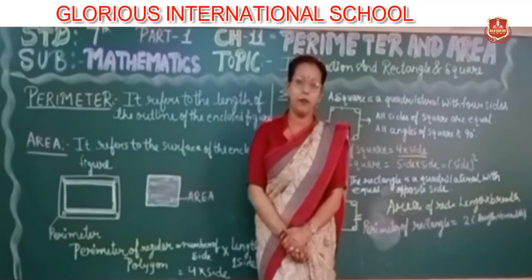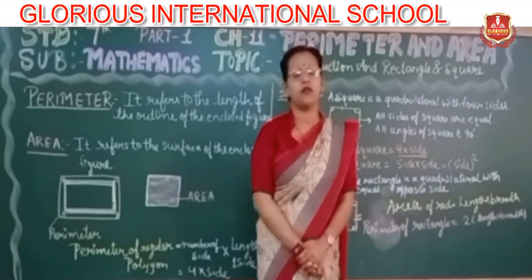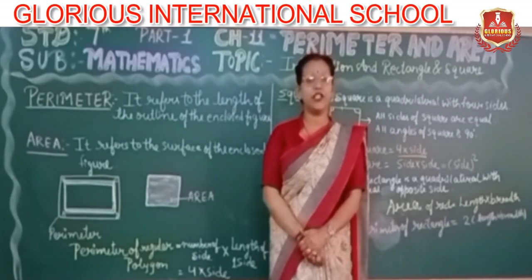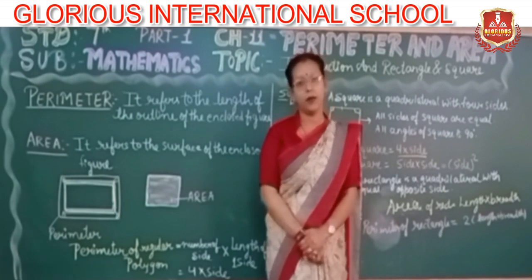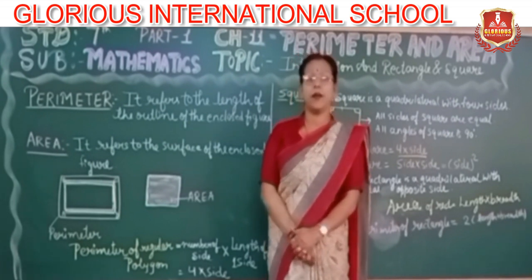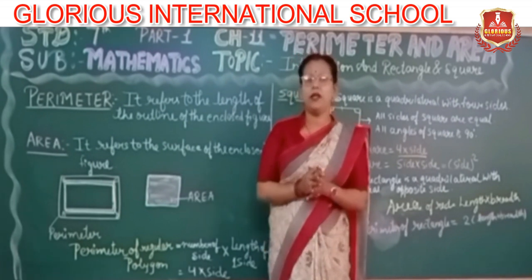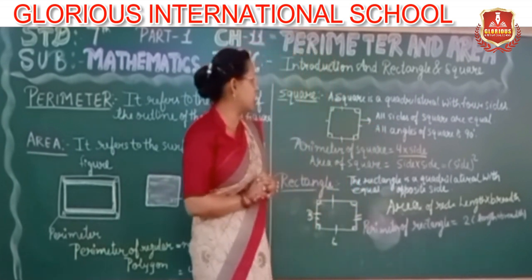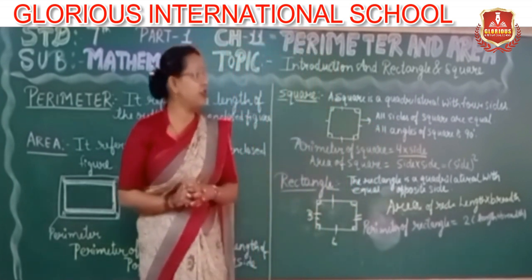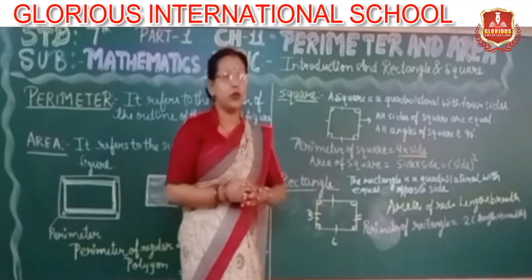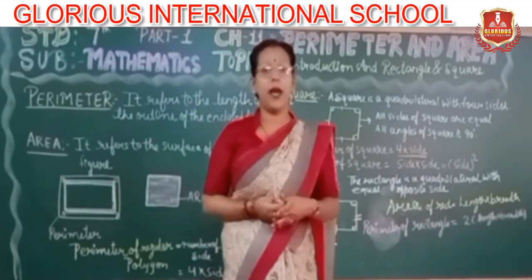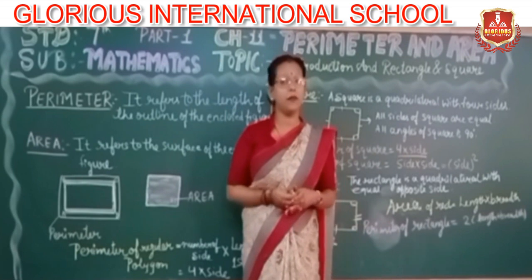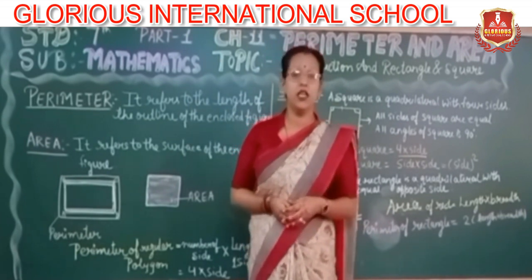Hello students, I am Prina Taman from Murray's International School. Today we are looking at Class 7 Mathematics, Chapter 11, Perimeter and Area, Part 1. Today my topic is introduction to rectangles and squares, and we are talking about how to find the perimeter and area of rectangles and squares.